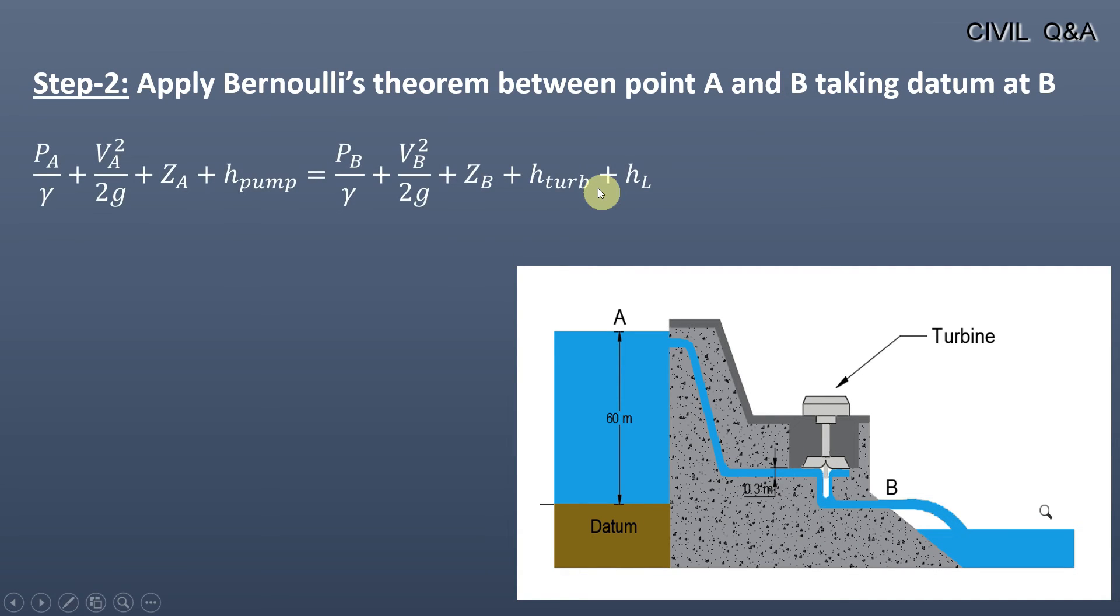Bernoulli's theorem is given as: pressure at A divided by unit weight of water plus velocity squared at A divided by 2g plus elevation head of A plus head of pump equals pressure at B divided by unit weight of water plus velocity squared at B divided by 2g plus elevation head of B plus head of turbine plus total head loss through the system.